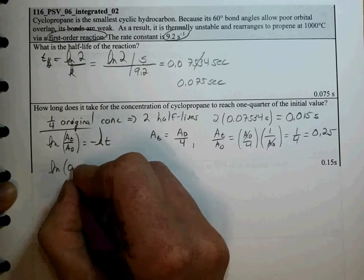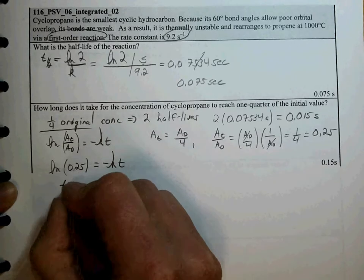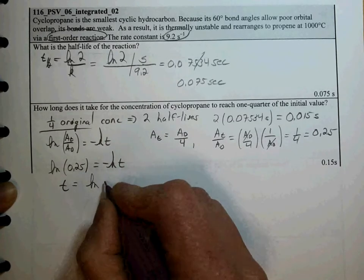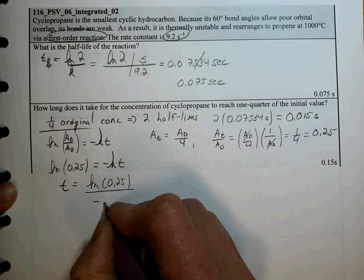Ln of 0.25 is equal to minus kt. T is equal to ln of 0.25 divided by minus k.